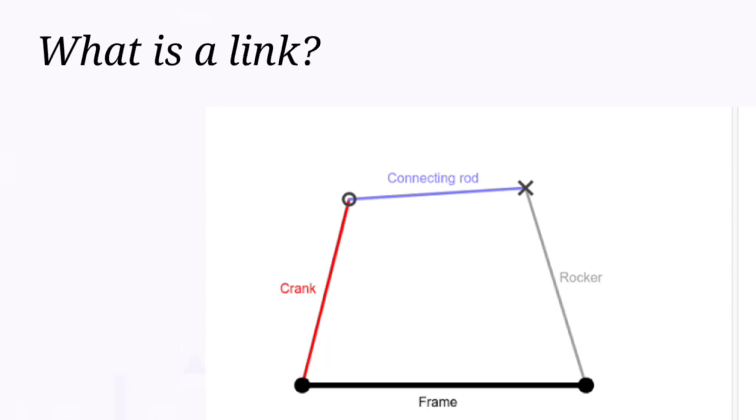What is a link? A link is a part of mechanism that permits relative motion.